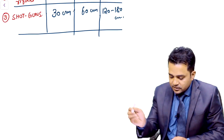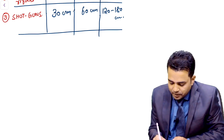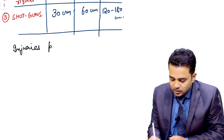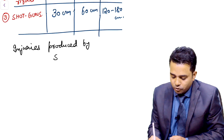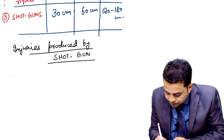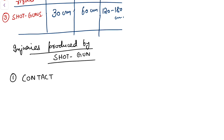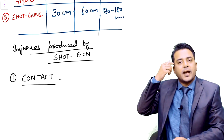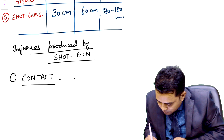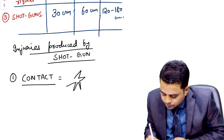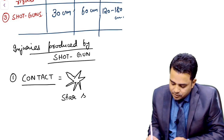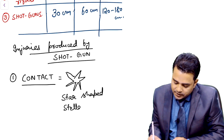After these ranges, let us see the injuries produced by a shotgun weapon. We are moving forward to terminal ballistics — injuries produced by shotgun. There are some conventional ranges. For a contact shotgun wound, whenever the gun is kept in contact with the skin — whether hard contact, loose contact, or angled contact — you will get a star-shaped wound, also called a stellate-shaped wound.